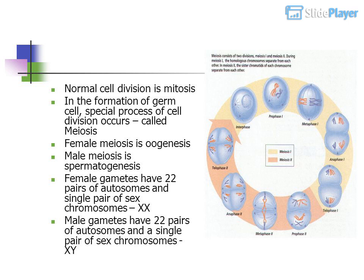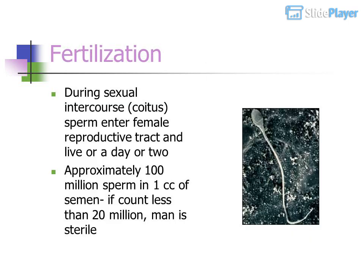Female meiosis is oogenesis; male meiosis is spermatogenesis. Female gametes have 22 pairs of autosomes and a single pair of sex chromosomes. Male gametes also have 22 pairs of autosomes and a single pair of sex chromosomes. Together at fertilization they form the zygote.